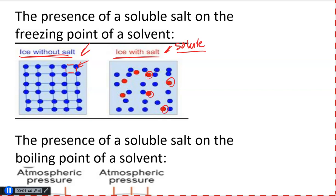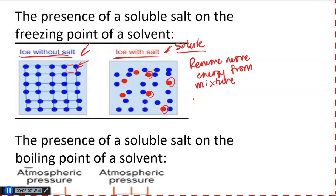Because of that lack of order, ice has a tougher time maintaining its crystalline structure. In order for the crystal structure to form even with the presence of solute particles within the solvent, you have to remove more energy from the mixture. Essentially, what that translates into is that the freezing point will actually be decreased as compared to the original freezing point of the pure solvent.